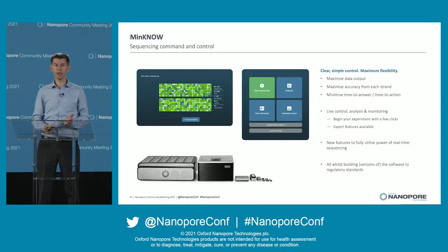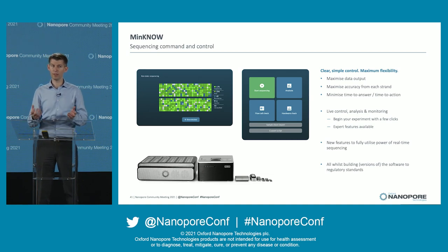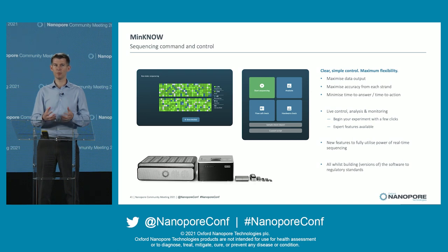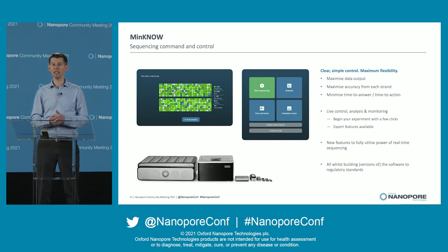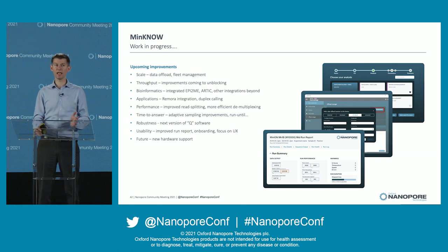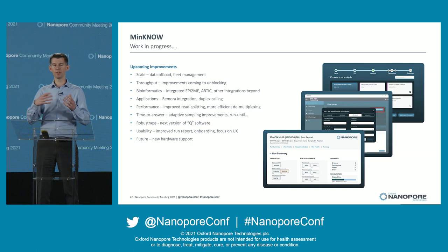I want to take a few minutes to talk about our software. Those familiar with Nanopore will be familiar with MinKNOW — it's the sequencing software that drives your instrument. For many of you, this will be your primary interaction with Nanopore sequencing. MinKNOW is designed to be point and click, but because Nanopore is such a flexible technology, there are expert features just below the surface. Behind the scenes, MinKNOW is aiming to maximize your data output, maximize your accuracy, and minimize your time to answer — so you can take action as soon as you have the information you need. We have a large stack of work in progress, ranging from production scale sequencing, data management, fleet management, various optimizations, integrated bioinformatics, robustness, and increasing focus on user experience — as well as looking towards supporting new types of hardware.